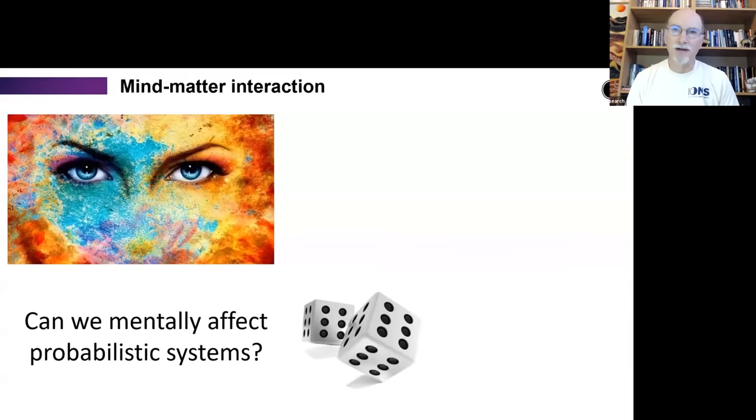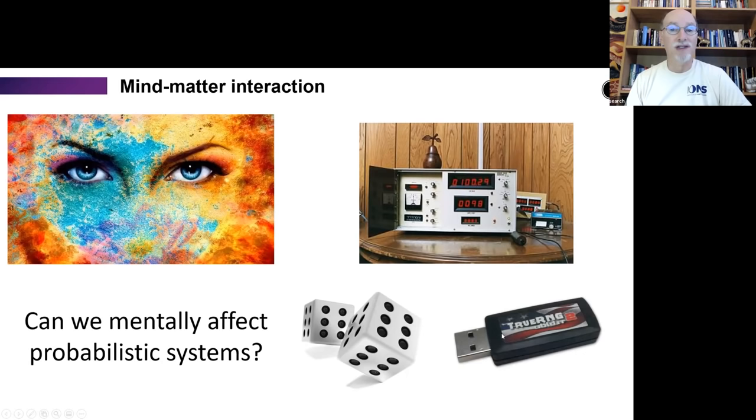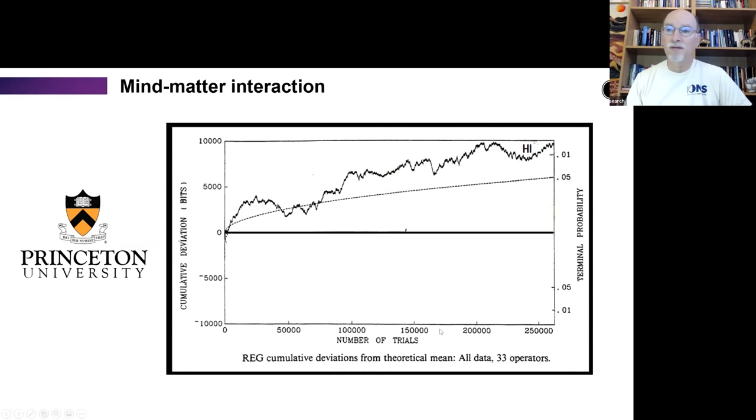So the first question, does mind interact with matter? Well, this has been studied extensively for many years now, well over 50 years. And the question initially came down to the use of very sensitive systems, like probabilistic systems. Originally, the tossing of dice. And then in more recent times, meaning last 40 years or so, the use of electronic random number generators. So this version here was used at the Princeton Engineering Anomalies Research Lab for many years.